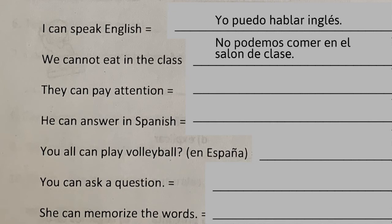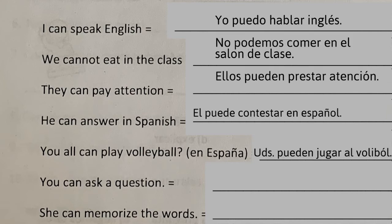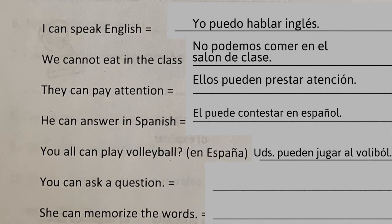Next, 'they can't pay attention' — ellos pueden prestar atención. 'You all can play volleyball in España' — you don't have to do that from the perspective of España. If you put vosotros podéis jugar volleyball, that's fine. Or you can simply write ustedes pueden jugar volleyball.